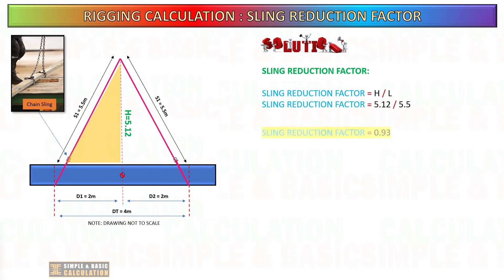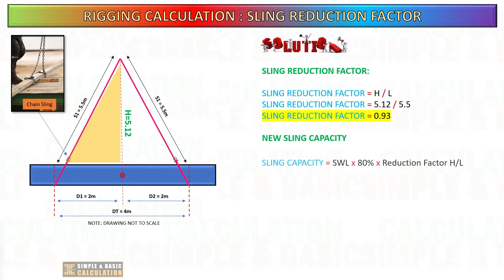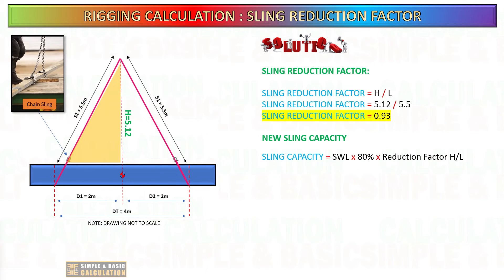For the chain sling choker hitch, the computation is the same, with the only difference being the reduction factor of 80 percent.